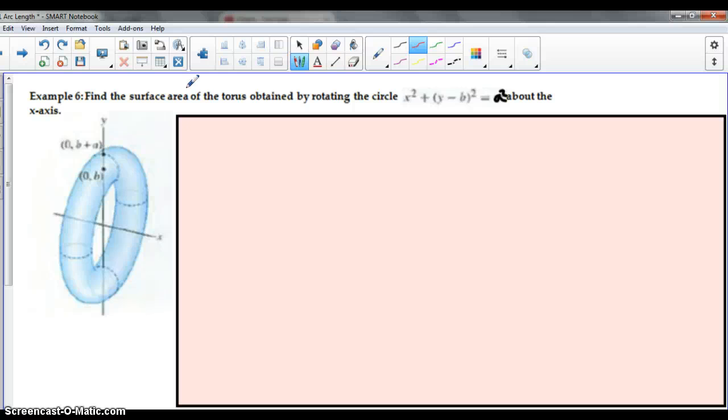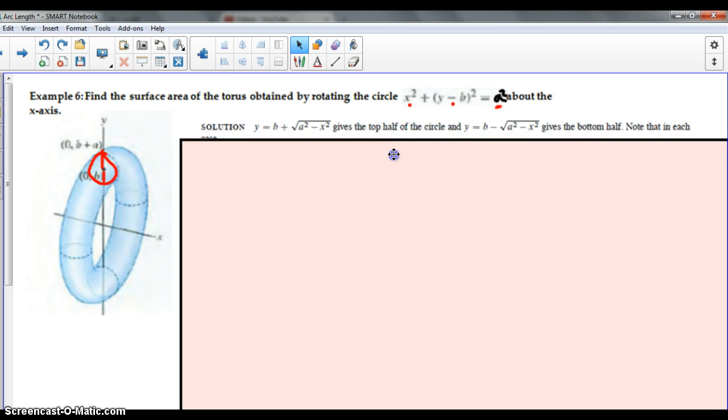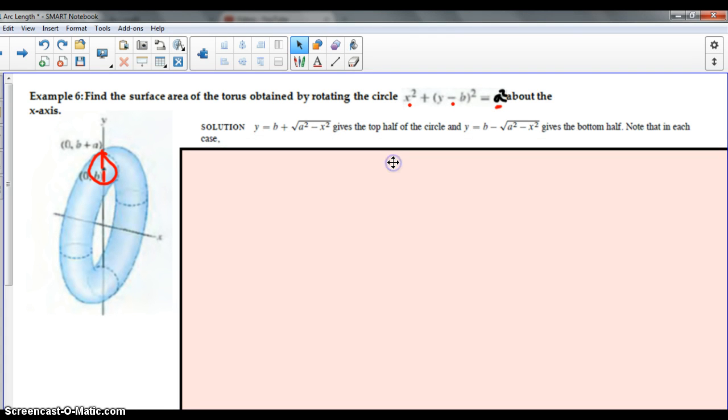We're going to rotate the circle x squared plus y minus b squared equals a squared about the x axis. Note that the circle is right over here. Picture it in 3D. The center is at 0, b. Hence x squared and y minus b squared. The radius of the circle is a, not r shown on the paper. Let's just change that to a. It goes up a units and down a units, right a units, left a units. We want to find the total surface area. In order to do that, we need to solve our equation of the circle here for y to get a function in terms of x.